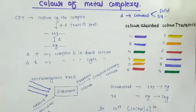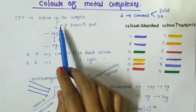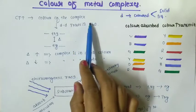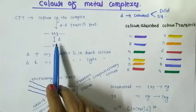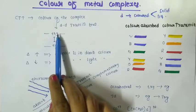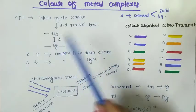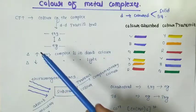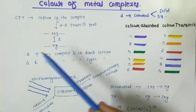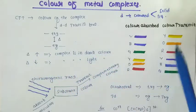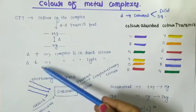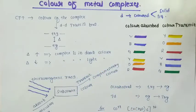The color of the complex is due to d-d transition—d electrons transitioning between eg set of orbitals and t2g set of orbitals. They are separated by energy difference delta. High delta value gives dark color, low delta value shows light color.